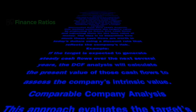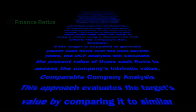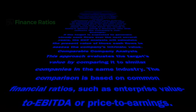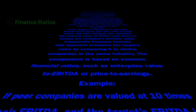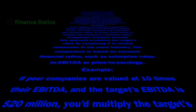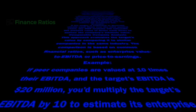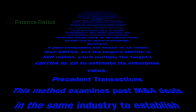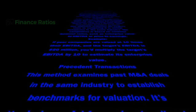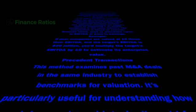Comparable Company Analysis evaluates the target's value by comparing it to similar companies in the same industry, using common financial ratios such as enterprise value to EBITDA or price to earnings. For example, if peer companies are valued at 10 times their EBITDA and the target's EBITDA is $20 million, you'd multiply the target's EBITDA by 10 to estimate its enterprise value. Precedent Transactions examines past M&A deals in the same industry to establish benchmarks for valuation, and is particularly useful for understanding how much buyers have historically paid for similar targets.